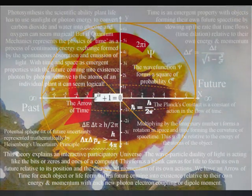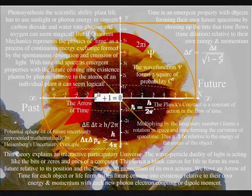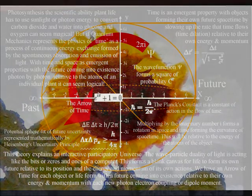We can see this process unfolding in many ways, and plant growth using photosynthesis is a perfect example. The scientific ability plant life has to use sunlight or photon energy to convert carbon dioxide and water into glucose and oxygen can seem magical. But if quantum mechanics represents the physics of time as a process of continuous energy exchange formed by the spontaneous absorption and emission of light...